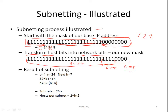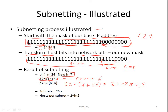The result of subnetting: B equals 4, where variable B represents number of borrowed bits, and N equals 24. The new H is calculated using the formula: 32 bits must always equal the sum of your network bits from the original mask, plus the borrowed bits B, plus the remaining host bits H. So host bits after subnetting will be 32 minus (B plus N) = 32 minus (4 plus 24) = 32 minus 28 = exactly 4. So we have 4 host bits after borrowing exactly 4 bits.